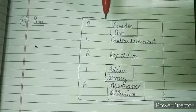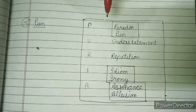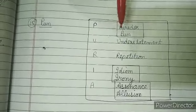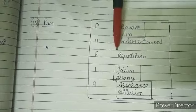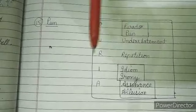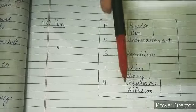Today we have to learn another word, that is PURYA. You just have to remember: shampoo purya. PURYA defines another seven figures of speech. P stands for two words — paradox and pun; U for understatement; R for repetition; I for idiom and irony; A for assonance and allusion.